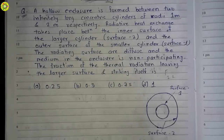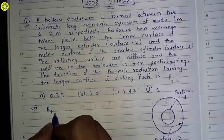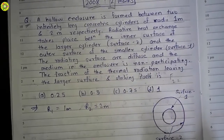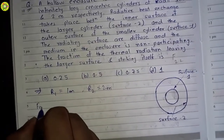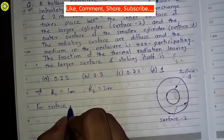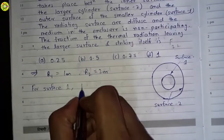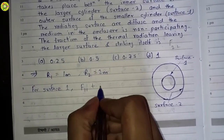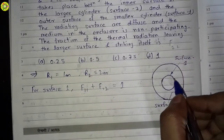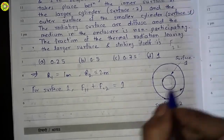We have R1 = 1 meter and R2 = 2 meter. For surface 1, we apply the summation rule: F₁₁ + F₁₂ = 1.